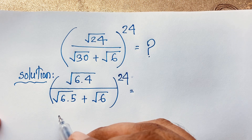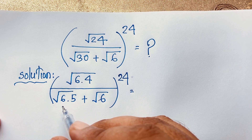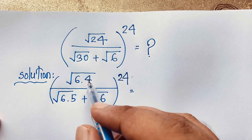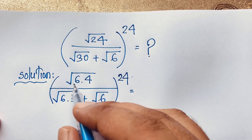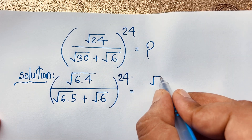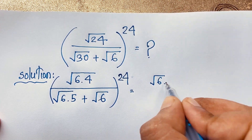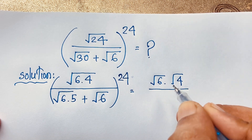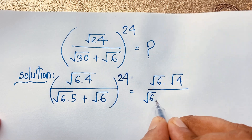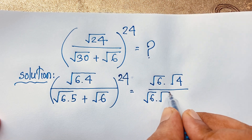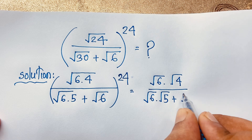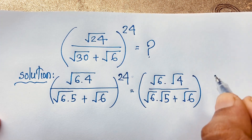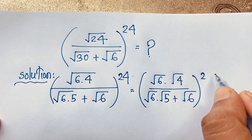Now if I apply the math formula √(ab) = √a × √b, it will be (√6 × √4) over (√6 × √5 + √6), and the whole bracket is to the power 24.